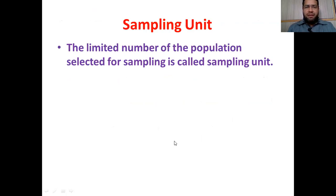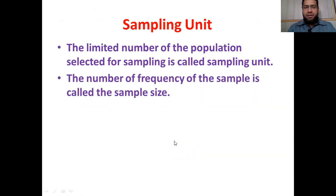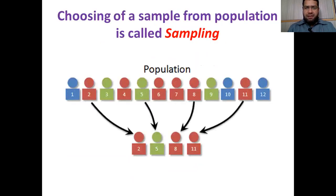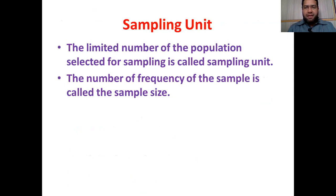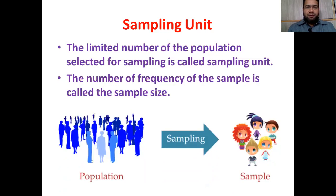What is a sampling unit? The limited number of individuals selected from the population for sampling is called the sampling unit, which is simply the sample size — the frequency of the sample. For example, if we have chosen four individuals as our sample, then four will be the sampling unit and the sample size will be four.